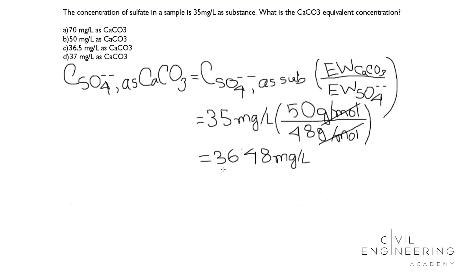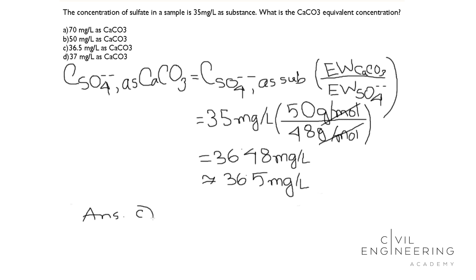So we got the answer 36.48 mg per liter. Let's check the answer choices. Here it is 36.5, which is very close to our answer. So 36.48 mg per liter is equivalent to 36.5 mg per liter. The answer is C: 36.5 mg per liter as calcium carbonate.